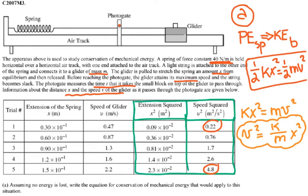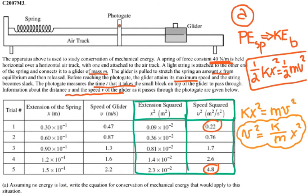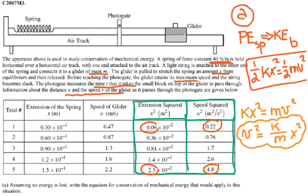that gives me 4.8 minus 0.22 gives me 4.58. So that is 4.58. My x squared goes between 0.09 and 2.3. So that gives me 2.21, but it is 10 to the negative 2.